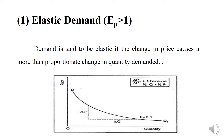For example, suppose the price of gold per gram declines from rupees 160 to rupees 140. As a result, demand for gold rises from 1000 kilograms to 2000 kilograms. Since the elasticity of demand for gold is greater than one, gold is a luxury item and has elastic demand.